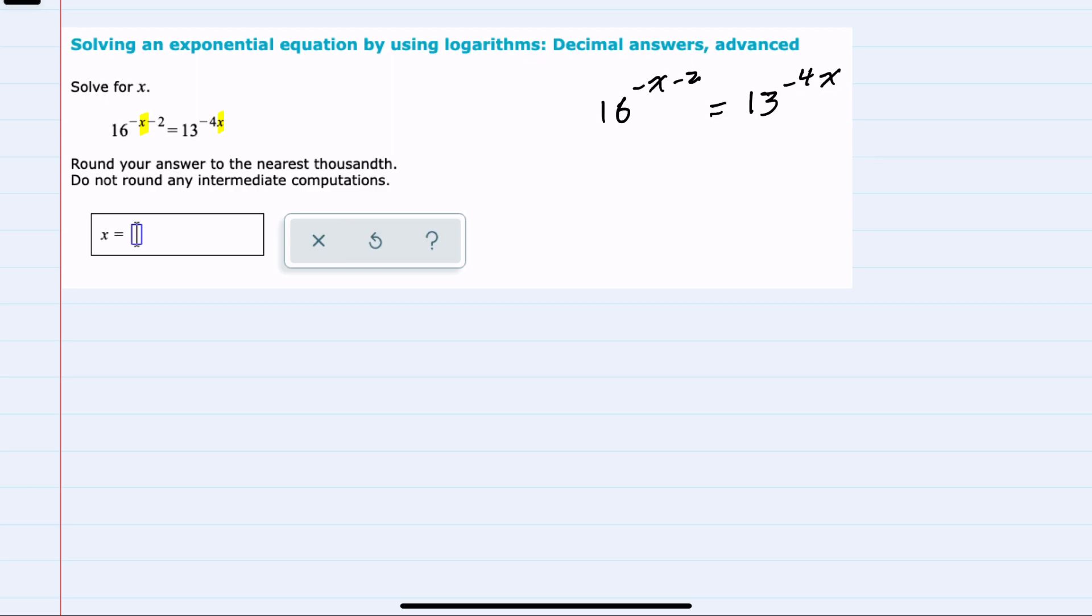Since those variables are in the exponents, logarithms are going to be the tool to help us get those variables out of the exponents. I can start by taking the log of both sides, and then using the rules for logs,